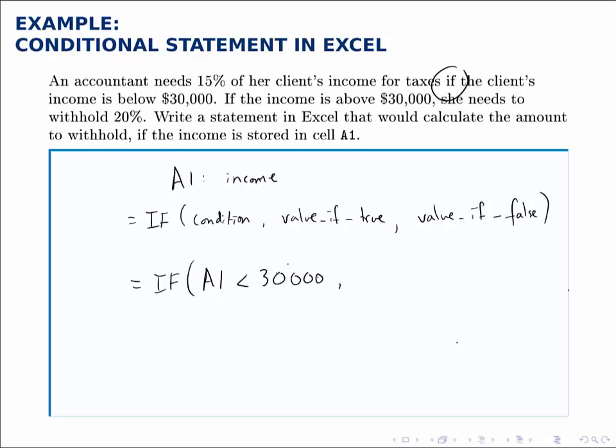If that's true, if the client's income is below $30,000, then we need to withhold 15%. So the amount that we'll withhold is 15% of the income, 15% of A1, which would be 0.15 times A1.